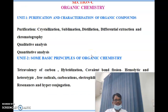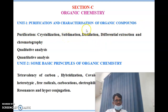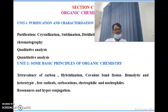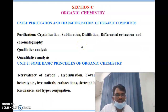Section C is organic chemistry. Unit 1 covers purification and characterization of organic compounds — crystallization, sublimation, distillation, differential extraction, and chromatography, along with quantitative and qualitative analysis. Unit 2 covers basic principles of organic chemistry: tetravalency of carbon, hybridization, covalent bond fission, homolytic and heterolytic cleavage, free radicals, carbocations, electrophilic and nucleophilic species, resonance, and hyperconjugation.